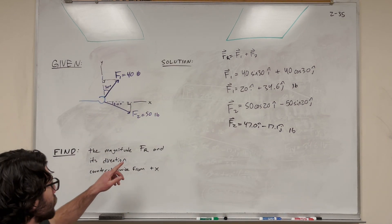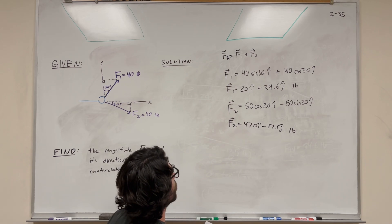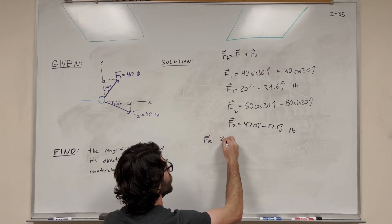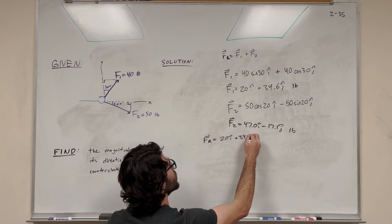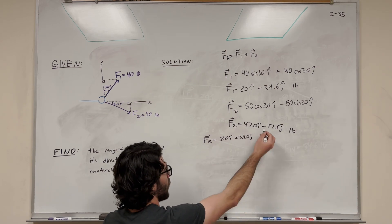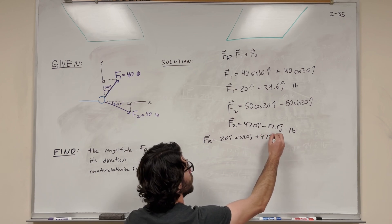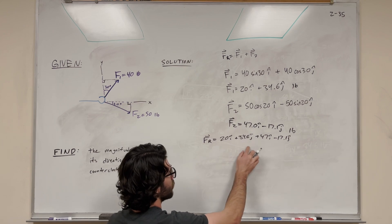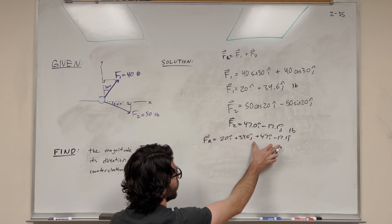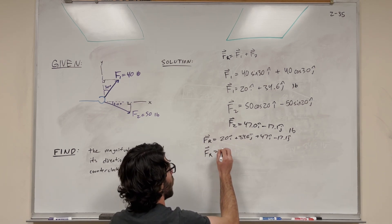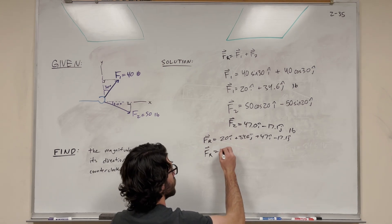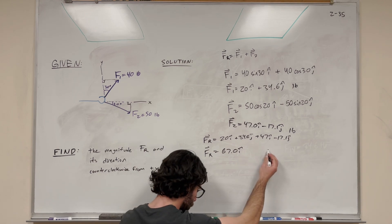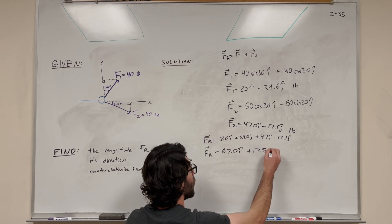So now if we want to find the resultant force, we just add the vectors together. Force resultant is going to be equal to force 1, so it's going to be 20i plus 34.6j, and we're going to add force 2. So this is plus 47i minus 17.1j. When we add the vectors together, the i component is 20 plus 47 equals 67i. And then 34.6 minus 17.1 is 17.5j.